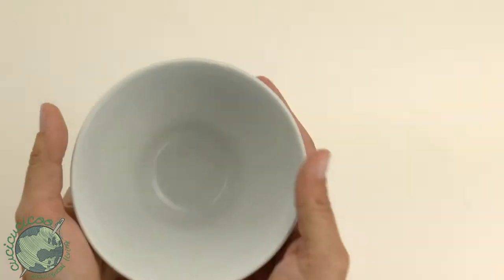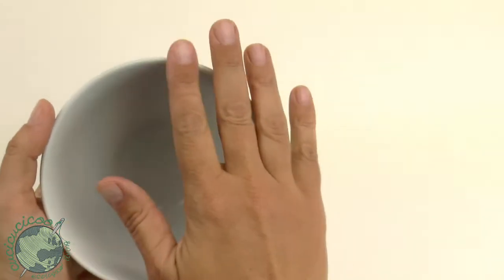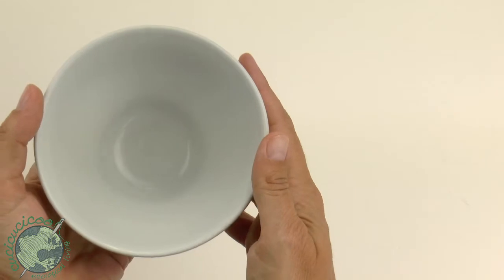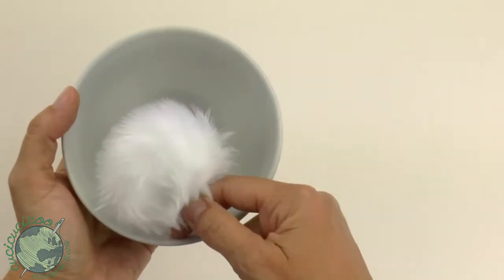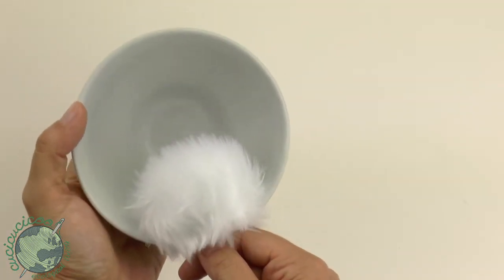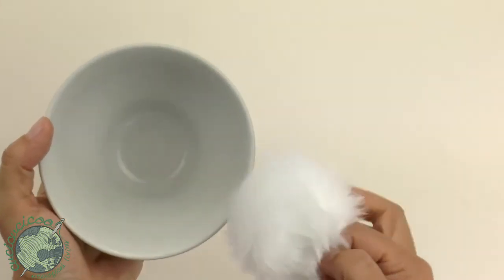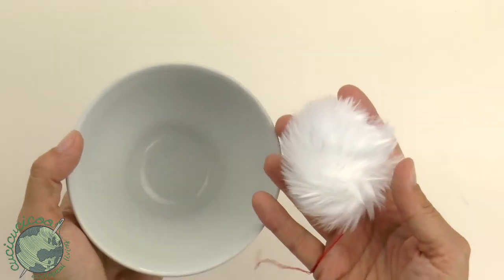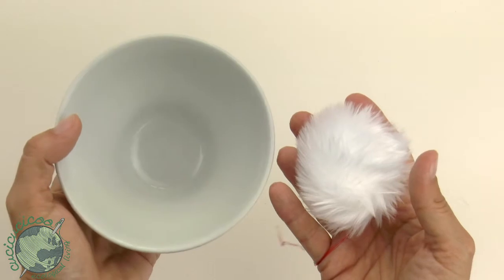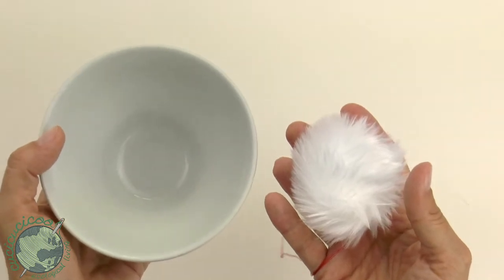This bowl here has a diameter of five inches or about 13 centimeters and using this I made a pom-pom like this. So you can see it's about halfway through. So if you like this size of pom-pom you can use about a five inch bowl or 13 centimeters.